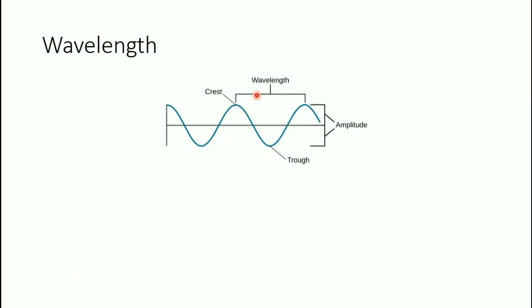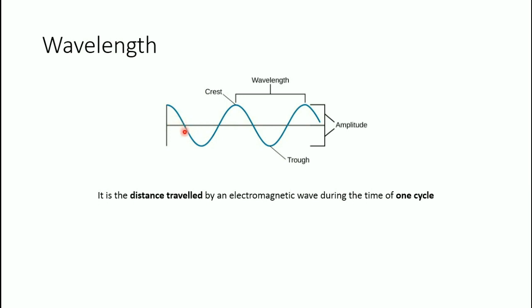Now let's proceed to discussing wavelength. From this image, wavelength is indicated clearly. Wavelength is defined as the distance traveled by an electromagnetic wave during the time of one cycle. In this wave, one cycle goes from a starting point, rises, and comes back — that is one cycle, and the next cycle is the second. From the definition, the wavelength is the distance traveled by the signal within one cycle. The distance from that starting point to the end of one cycle is our wavelength. Another way to define wavelength: it is also the distance from one crest to another crest of the wave.